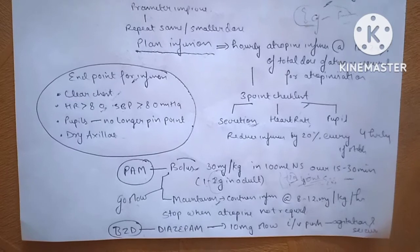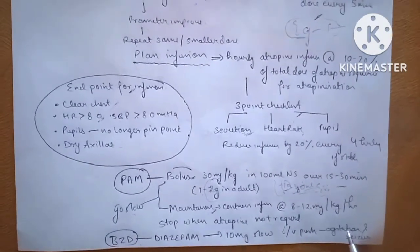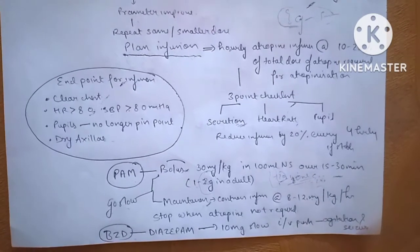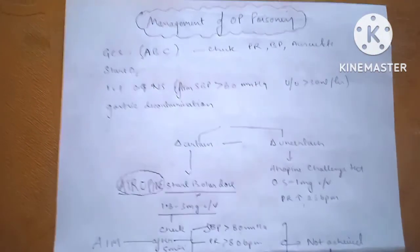Some of the cases of OP poisoning have seizures and might be agitated a lot. In that case, we give 10 mg diazepam IV slow. So this was brief about OP poisoning. Hope you liked it, thanks for watching.